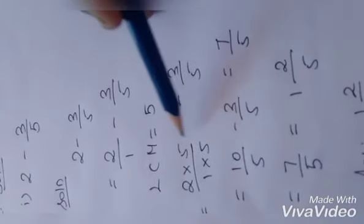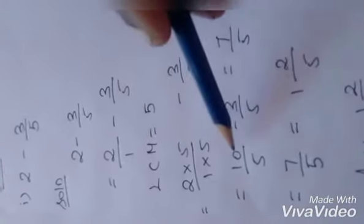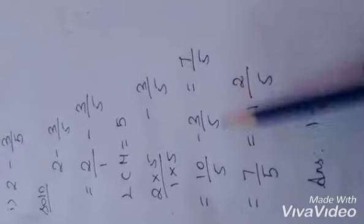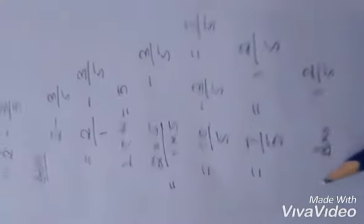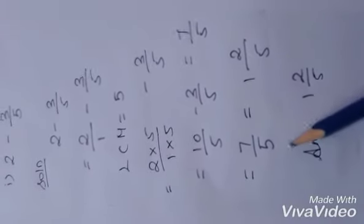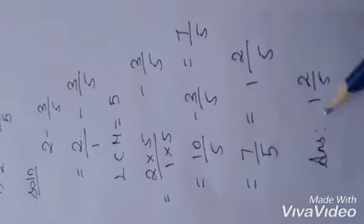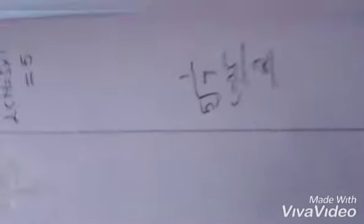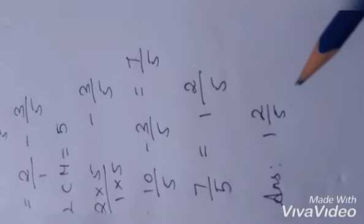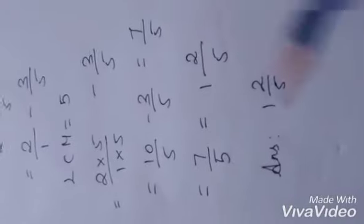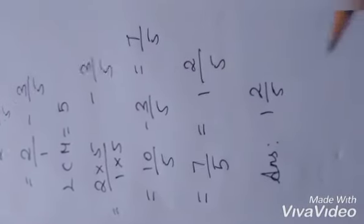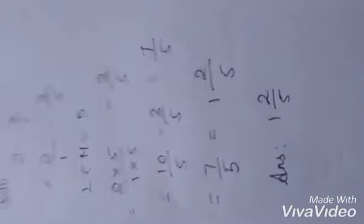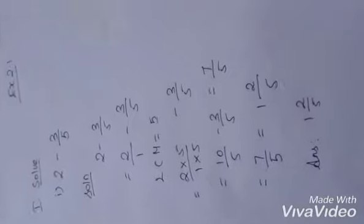I multiply the denominator 1 by 5 to get 5, and the numerator 2 by 5 to get 10. So it becomes 10 by 5 minus 3 by 5. Now it is a like fraction. 10 minus 3 is 7, so the answer is 7 by 5. This is an improper fraction — the numerator is larger than the denominator. Dividing: 5 goes into 7 once with remainder 2, so the mixed fraction is 1 and 2 by 5. The answer is 1 2/5.